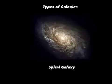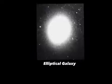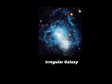Hubble classified galaxies into three main categories: spiral, elliptical, and irregular.